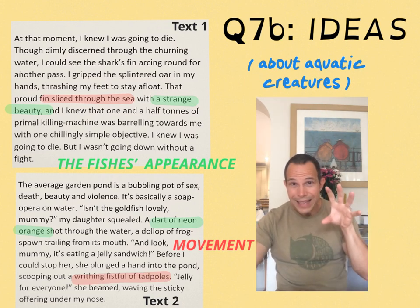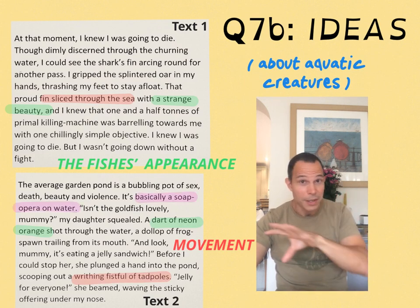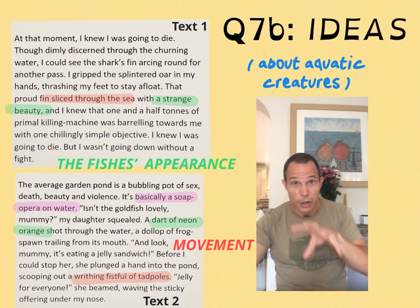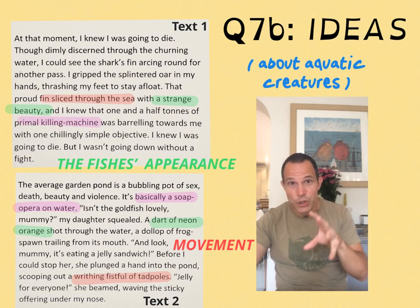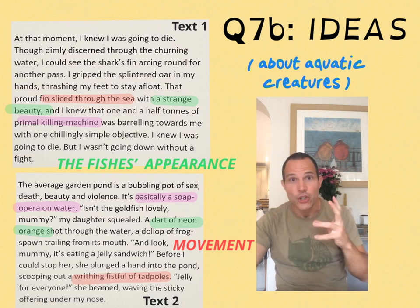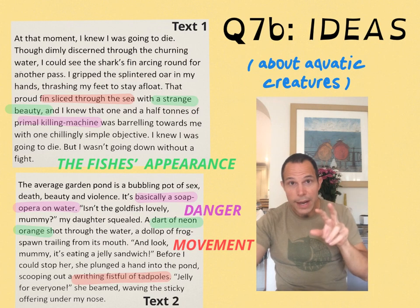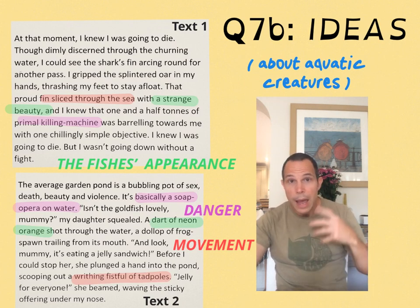Text Two describes the pond as a 'soap opera' because such violence and bloodshed occurs in it — nature here very red in tooth and claw. And in Text One your man describes the shark as a 'killing machine.' So another connection: violence, bloodshed, or danger. Three connections, three links, six quotations.